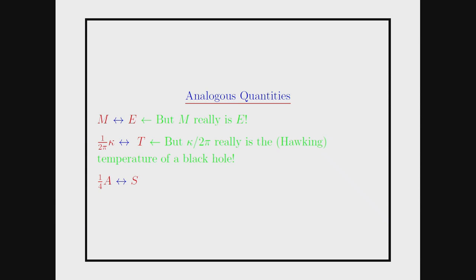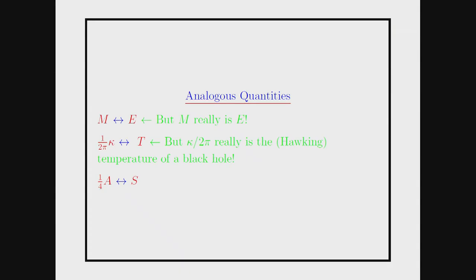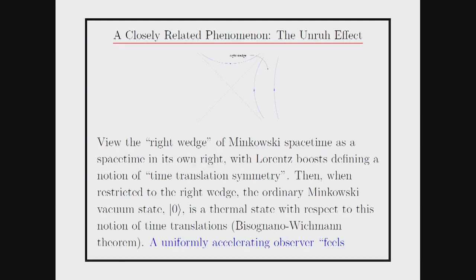We now have only one more dotted line — are these quantities physically the same? We've fixed the numerical factor because we have the exact formula for the temperature: kappa over 2 pi is the temperature, which means one quarter of the area is supposed to represent the entropy. So does one quarter area represent the physical entropy of a black hole?